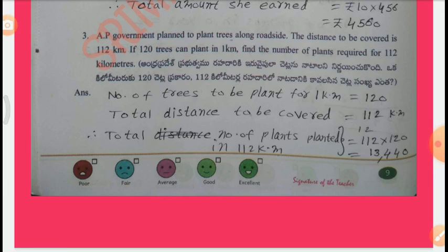The distance to be covered is 112 km. If 120 trees can be planted in 1 km, find the number of plants required for 112 km. Solution: Number of trees to be planted for 1 km = 120. Total distance to be covered = 112 km. By multiplication, we get 13,440.